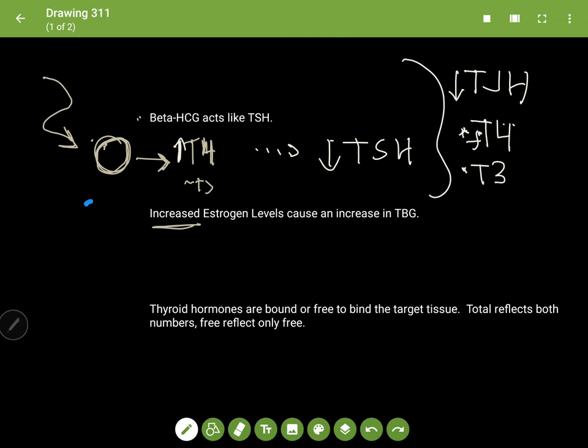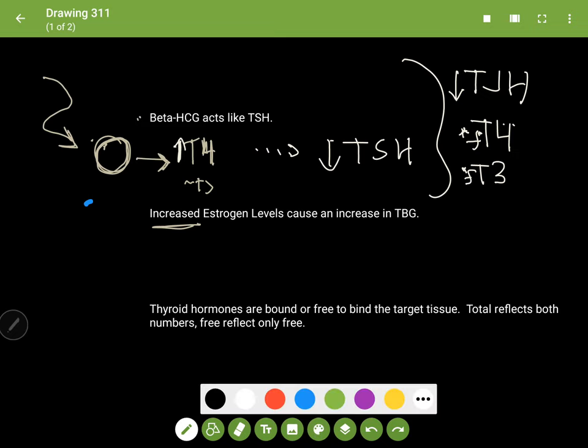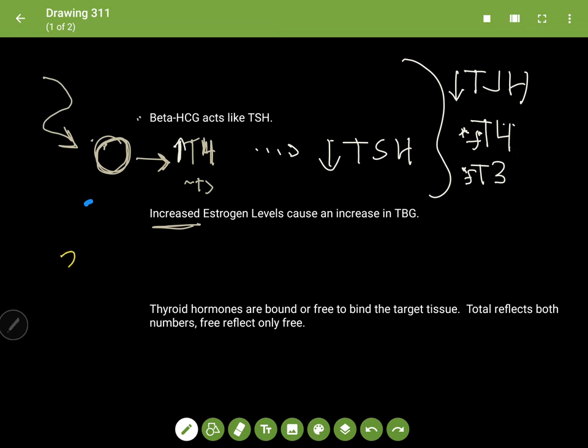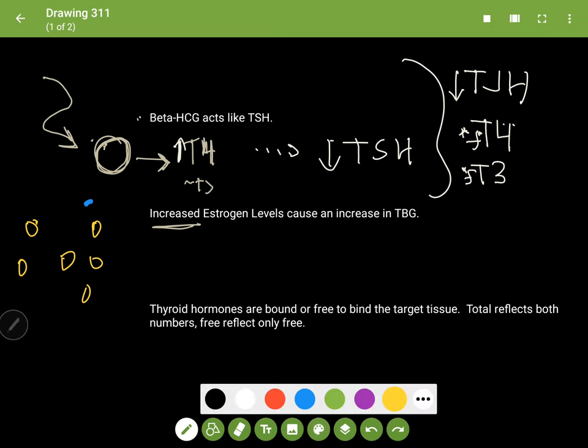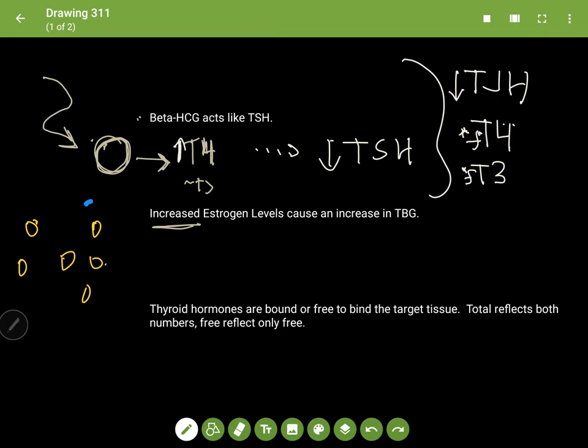But these are hormones that are directly secreted by the thyroid, so they're going to be free hormones for the most part. Increased estrogen levels cause an increase in thyroxin-binding globulin. So remember, in the circulation there are TBGs, or thyroxin-binding globulin, and basically what they do is bind the thyroxin hormones like T4.